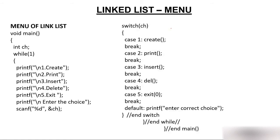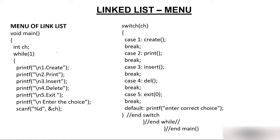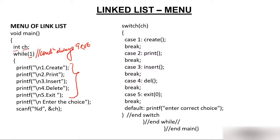Let's start with the print function. In the main function, we have a variable 'ch' of integer type, and a while loop with condition always true. The menu options are: one create, two print, three insert, four delete, five exit. When you go to a restaurant you have a menu and you order accordingly — similarly here, instead of dishes we have a linked list with operations: create, print, insert, delete, and exit. We already did create; now our job is to print.